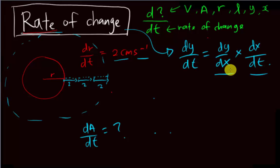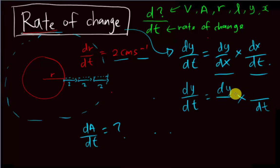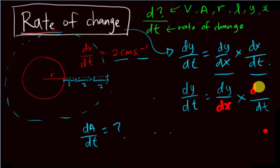Let me explain how to remember the chain rule. If I want to find dy/dt, I write dy on top and dt at the bottom. The middle is a multiplication. I know the terms in the middle must be the same — so both middle terms are dx and dx. You can imagine canceling dx and dx, leaving dy over dt. That is how the chain rule is formed.